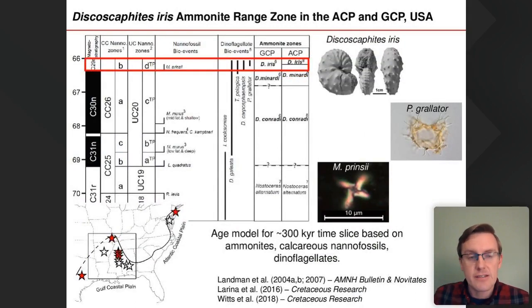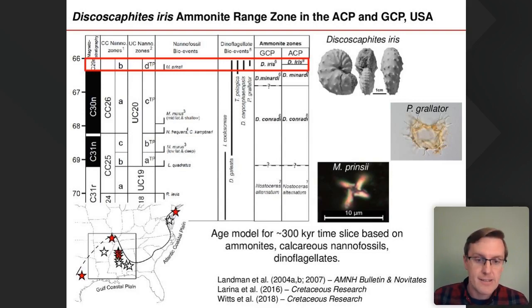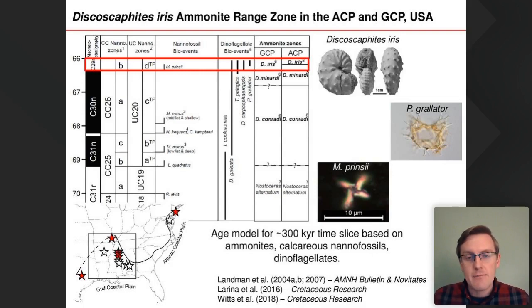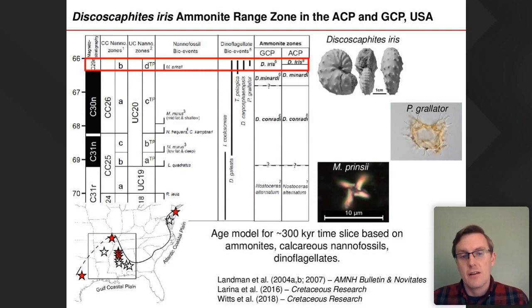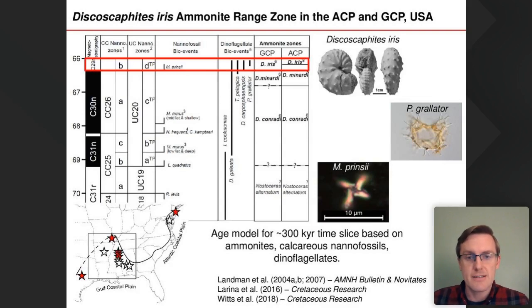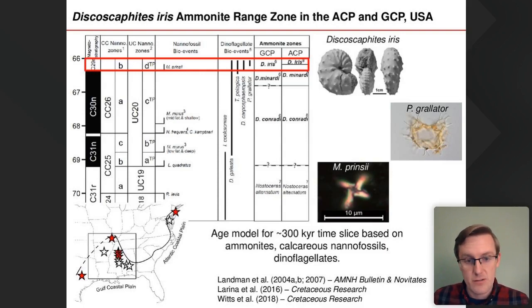One of the best places for studying the extinction in shallow marine settings is the Gulf and Atlantic coastal plains of the United States — a series of shallow marine sediments outcropping from Texas in the southwest up to New Jersey and New York in the northeast. Over the last few years, my colleague Neil Landman and our research group have been constructing new age models for these sections using ammonite biostratigraphy combined with microfossil records from calcareous nannofossils and dinoflagellates, identifying distinctive ammonite zones.